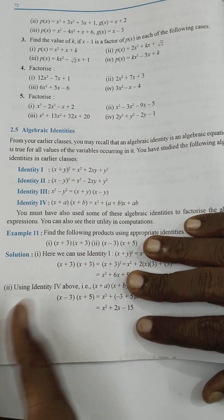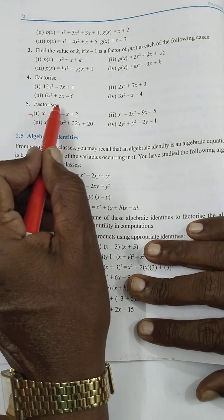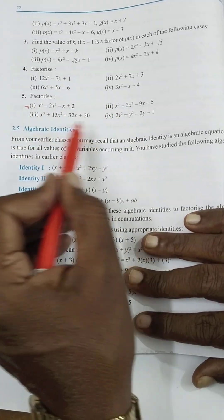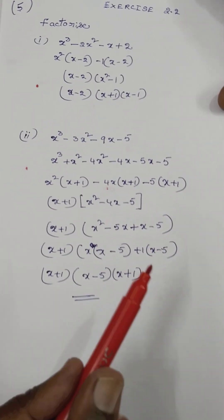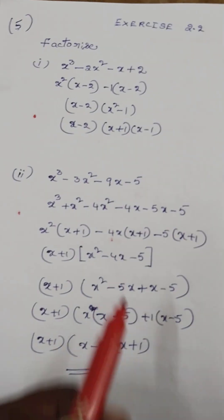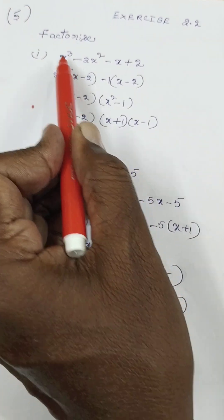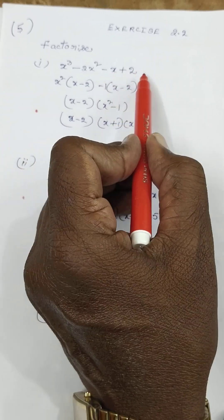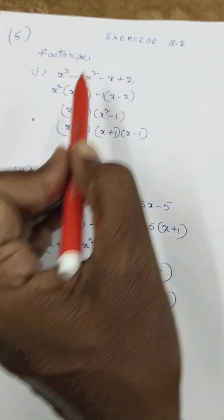The fifth problem — factorize these four problems, I explain. Listen carefully. First one: factorize x cubed minus 2x squared minus x plus 2. This is a simple problem.